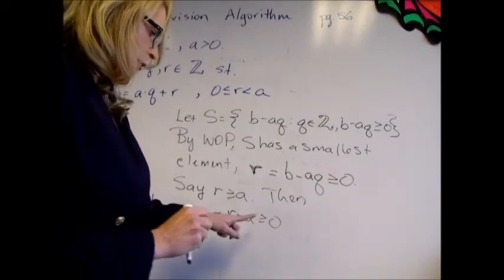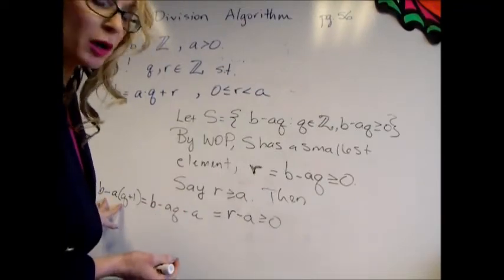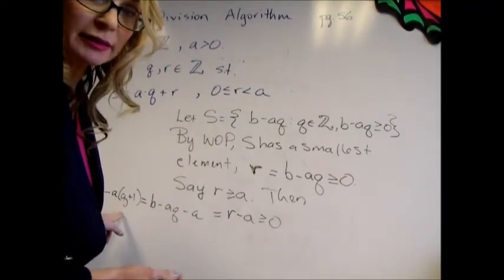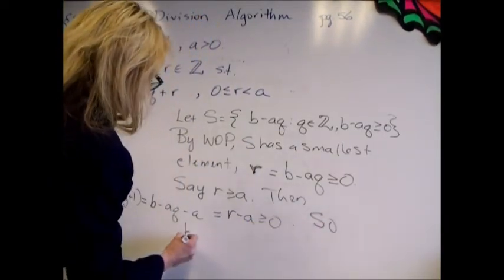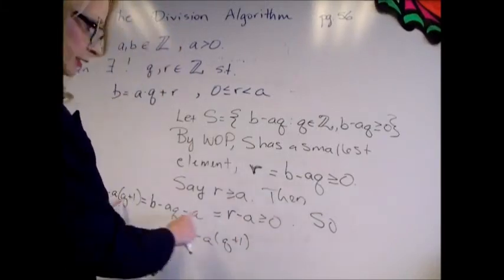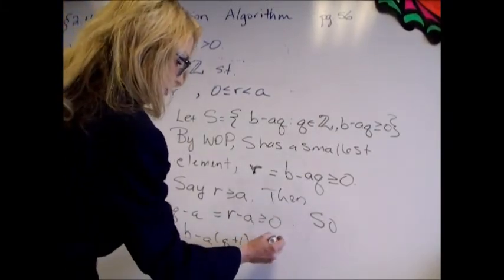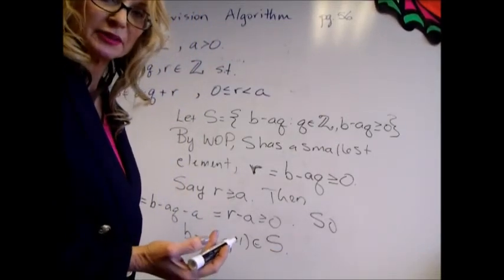But then by the form, Q is an integer, so is Q plus 1, this element belongs to S. So B minus A times Q plus 1 is non-negative, and therefore it's in S. It has the same form as the elements of S.